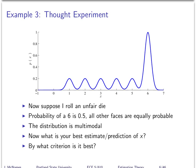Here's another example. In this case, I'm rolling an unfair die where the number six comes up more frequently. Same question: what's your best estimate of x? In some respects that's a trick question, because what's best depends on how you define best.